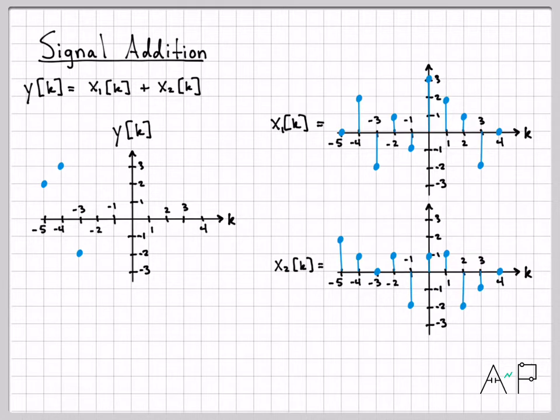Minus 2 plus 0 is minus 2. At time minus 2, we had 1 plus 1 to give us 2. So we plot that and just keep going.